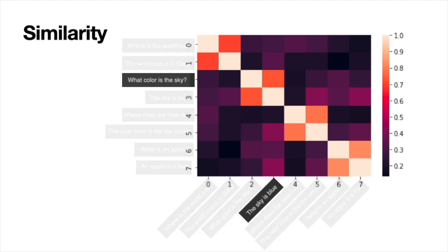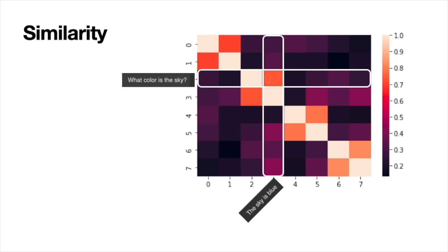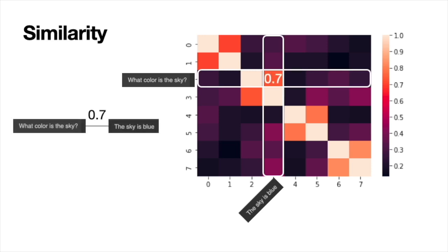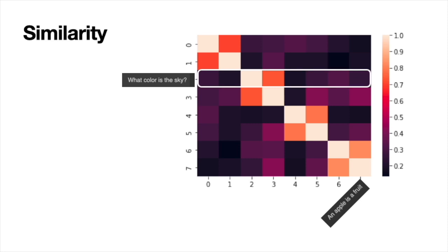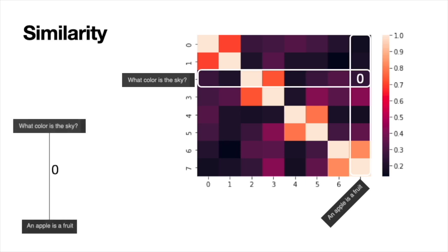For example, the similarity between 'What color is the sky?' and 'The sky is blue' is 0.7, implying they are quite similar. In contrast, the similarity between 'What color is the sky?' and 'An apple is a fruit' is a small number close to zero. When we compare every sentence to 'What color is the sky?', the most similar sentence other than itself is the answer: 'The sky is blue.' So we've built a very small search model using similarity. Obviously there's a lot more to search models than this, but this gives you an idea of how the first step of a search model can be a similarity search.